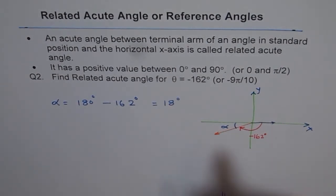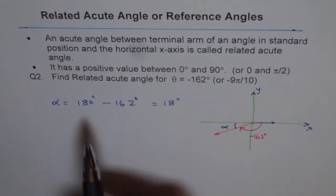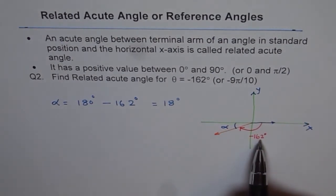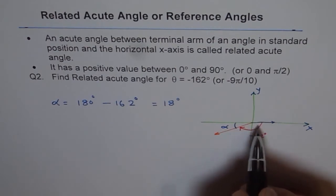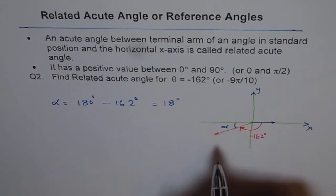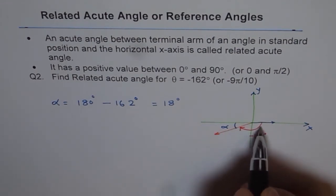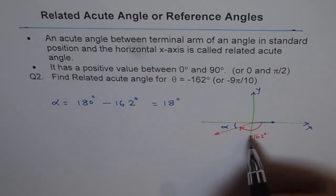Now some of my students have problem doing this because they think 180 minus -162 gives them a huge positive value. So don't get confused. Think you have come here and now if you are seeing from this half, then that angle is 180 minus this angle. Use absolute values.